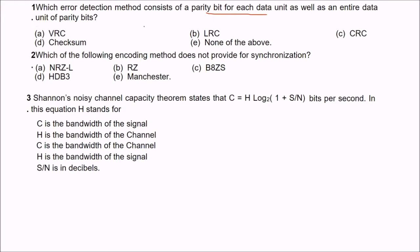The answer is LRC, because the LRC error detection method consists of a parity bit for each data unit as well as an entire data unit of parity bits. The second question is: which of the following encoding methods does not provide for synchronization? The answer is NRZL — it does not provide for synchronization.